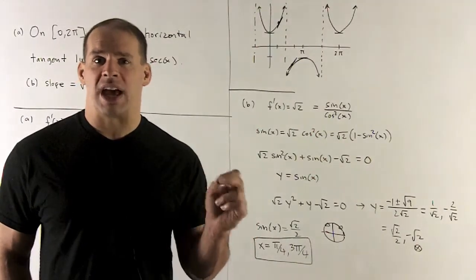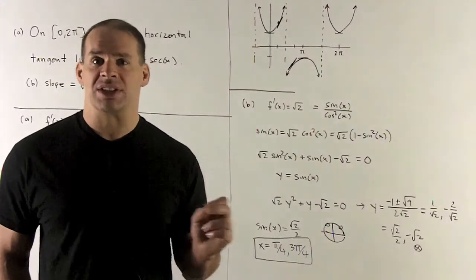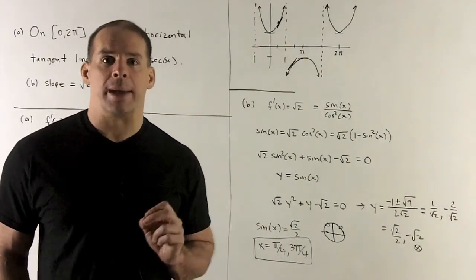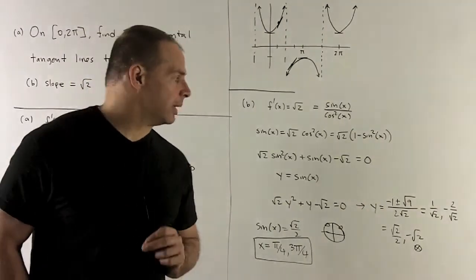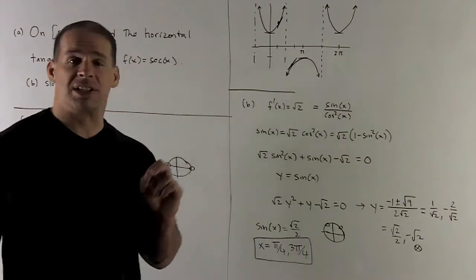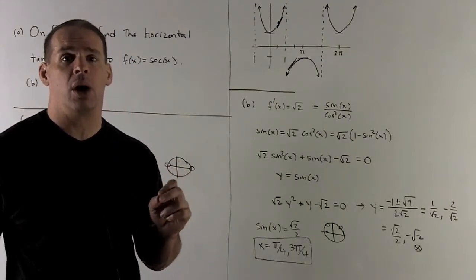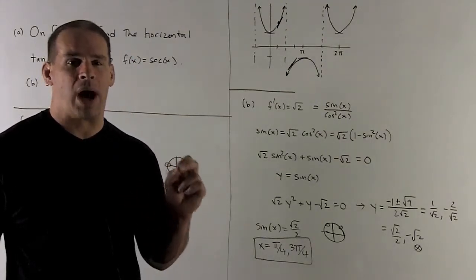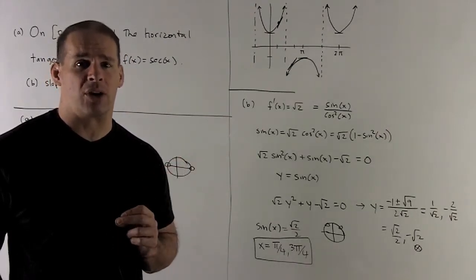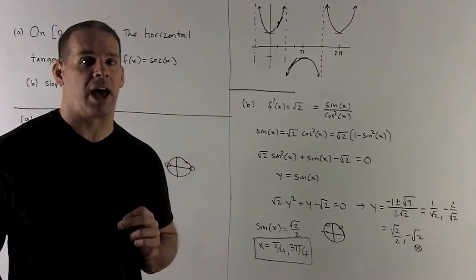If I let y equal sin(x), this is just something we can solve using the quadratic equation. So when I do that, what are we going to have? Our equation is going to be √2·sin²(x) + sin(x) - √2 = 0. So it's going to be √2·y² + y - √2 = 0. We can just put that in the quadratic equation, see what comes out.